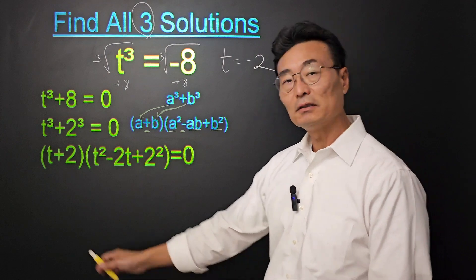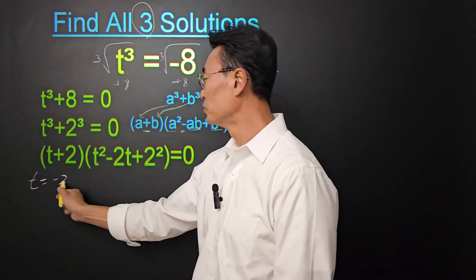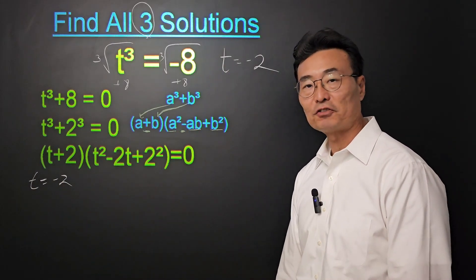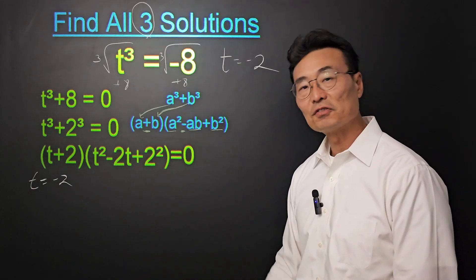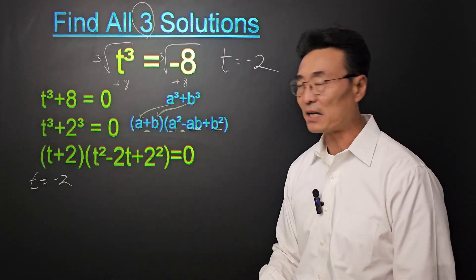Now we can solve for t from the factored form. So from the t plus 2, we get t equals negative 2. And then from the t squared minus 2t plus 2 squared, or 4, we need to use quadratic formula, as completing the square is not going to be factorable.